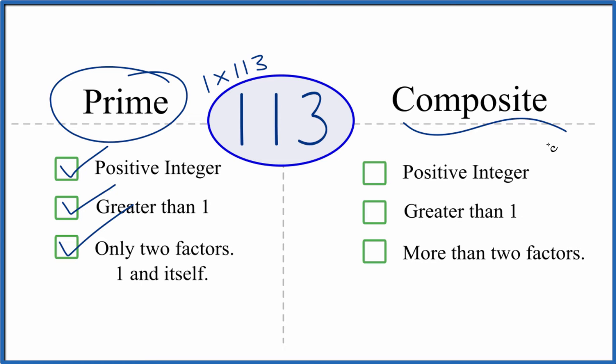But is it a composite number? It's a positive integer greater than 1. Are there more than two factors? We just said there are only two factors, so there are not more than two factors. Therefore, 113 is not composite.